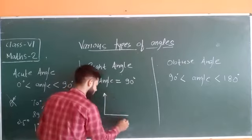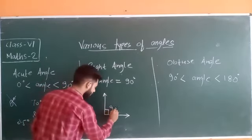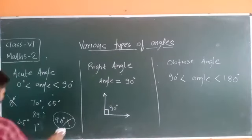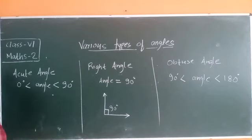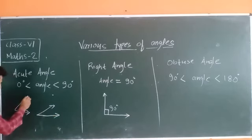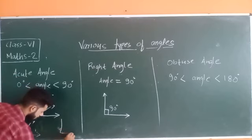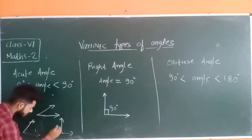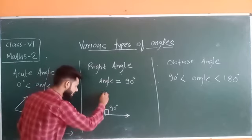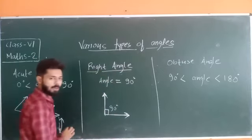If the angle is 90 degrees, this is known as a right angle. A right angle is shown by a small box symbol. Let me draw some figures based on acute angles — these are acute angles because they are less than 90 degrees. If you draw a perpendicular line it becomes 90 degrees, and that is a right angle.